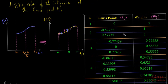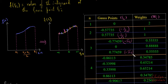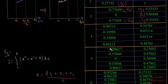To help remember Gauss points: for the two-point formula, the values ±0.57735 can be written as ±1/√3. For the three-point formula, the non-zero points can be written as ±√0.6, and the weights are 5/9 for the outer points and 8/9 for the center point. It is advisable to remember Gauss points and weights at least up to n = 3 to answer problems in exams.